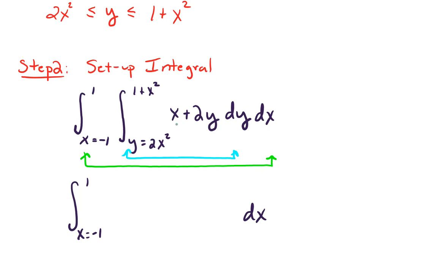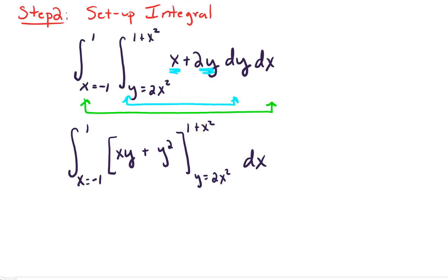Well, the integral of X with respect to Y is just going to be XY. X is acting like a constant, and so the antiderivative of that is just going to be XY. And now, working on this next term, the antiderivative of 2Y, integrating with respect to Y, of course, that's just going to be Y squared. And we're going to integrate from Y equals 2X squared up to 1 plus X squared.